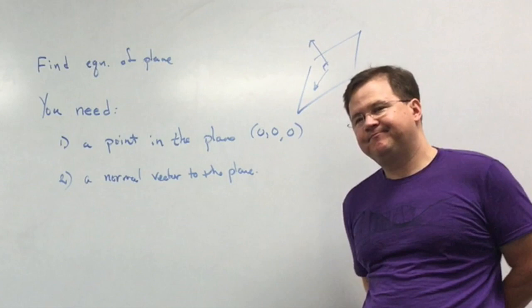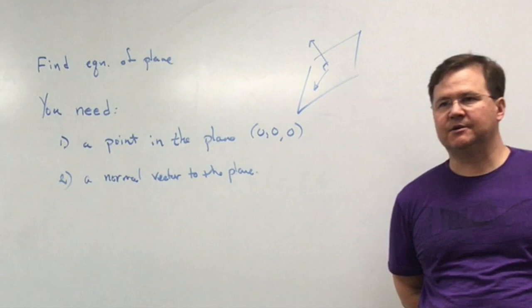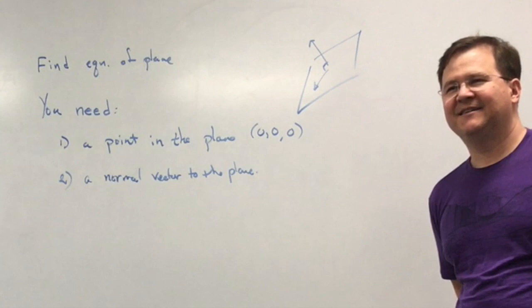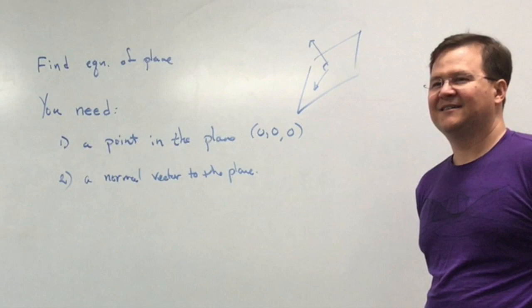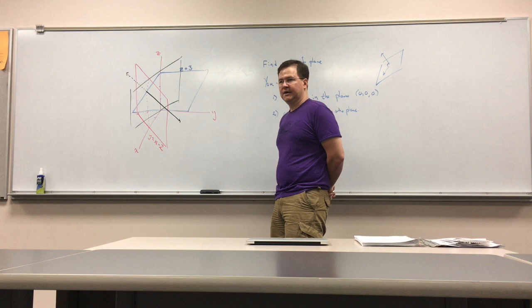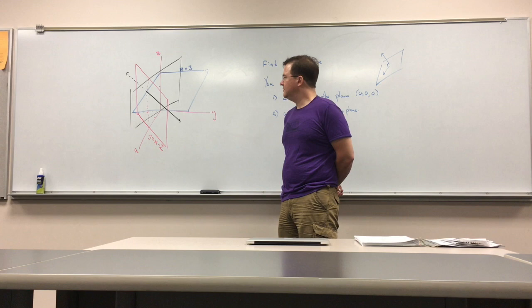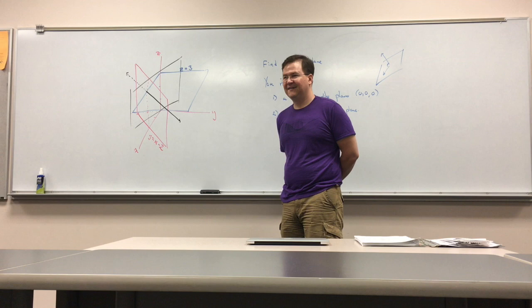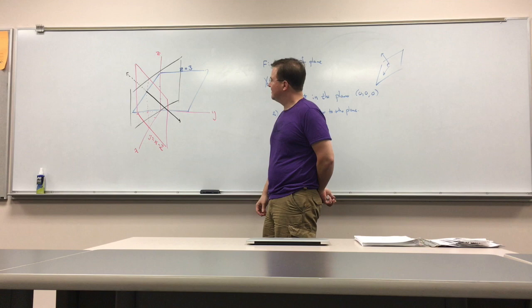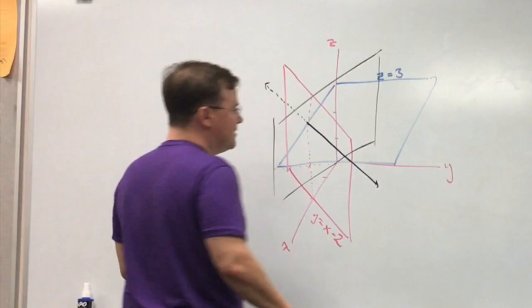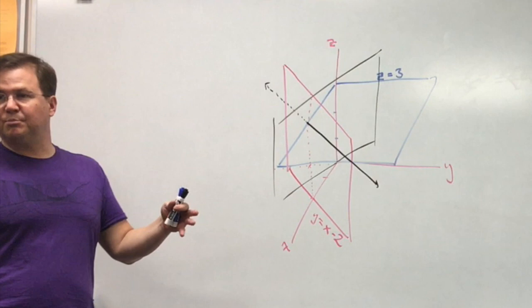What I need now is a vector that's normal to that plane. Where are we going to get a vector like that? It's going to come from the line of intersection. Do you see anywhere in this picture where such a normal vector is already drawn? I've attempted to draw the plane and this line, which is perpendicular to the plane.